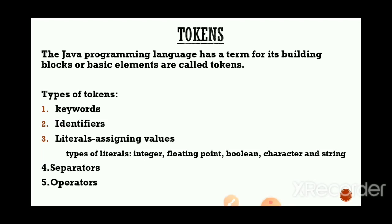What are tokens? The Java programming language has a term for its building blocks — our basic elements are called tokens. In our Java program we have so many terms and elements, and those terms and elements are called tokens. Further, tokens are categorized into different types: keywords, identifiers, literals, separators, and operators.